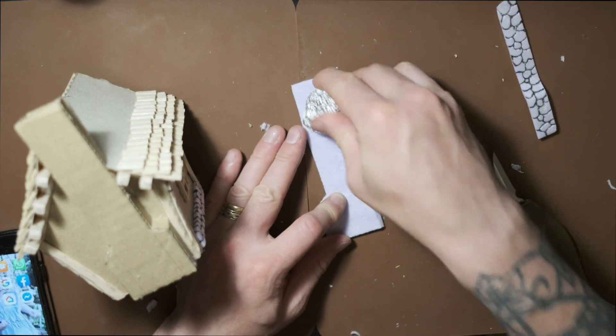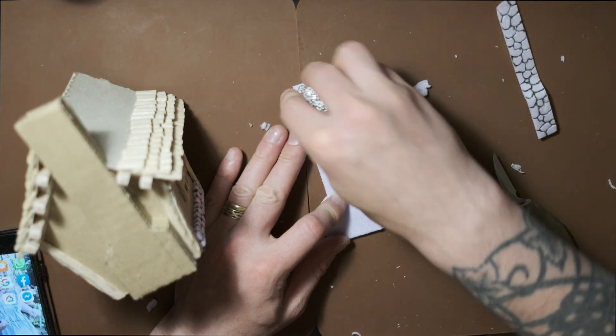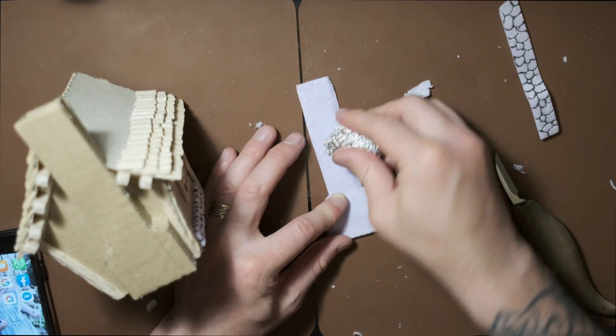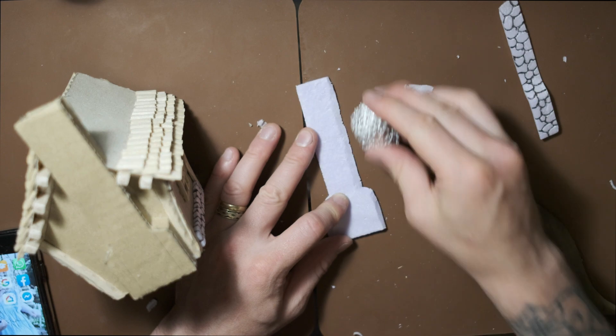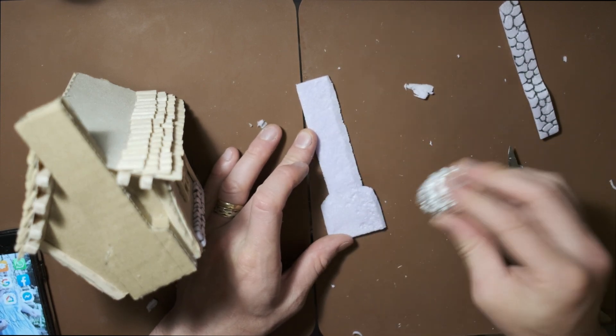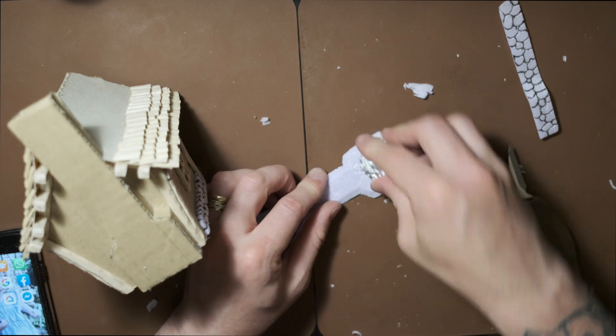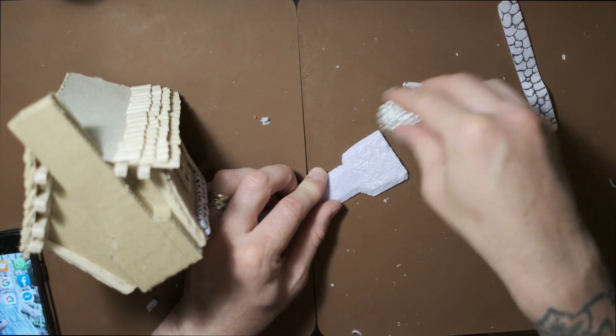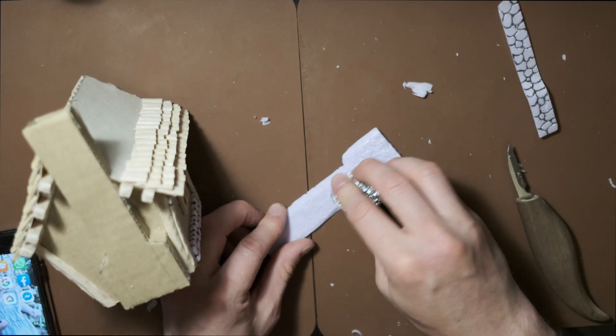I'm going to use this to texture it, which is rolled up tin foil. I got that tip off Black Magic Craft, as I'm sure anyone who makes miniatures is getting lots of tips off Black Magic Craft. That's a really good tip because that's really nice.